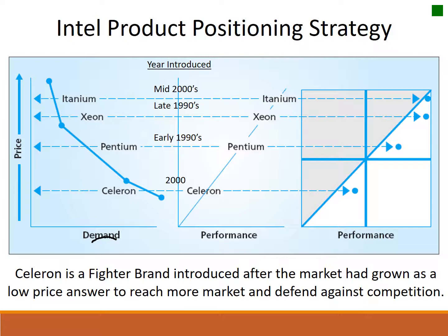The first products that were launched were the Pentium and then the Xeon. The Pentium was an introductory type of product that they launched, followed by a better-performing product, the Xeon. You can see that when we look at performance — the Pentium and then the Xeon followed.